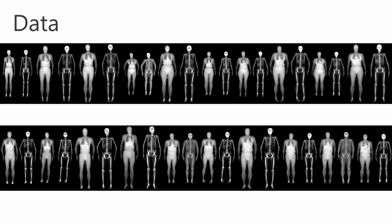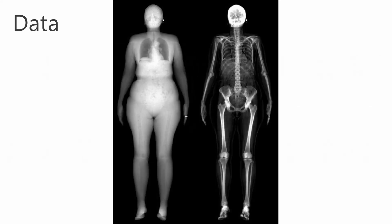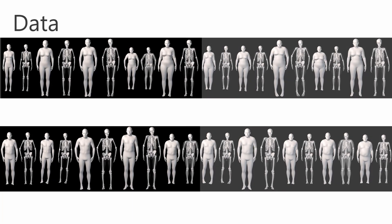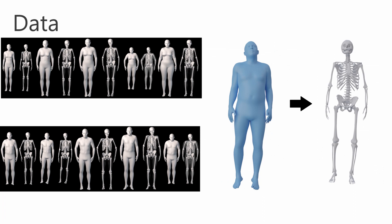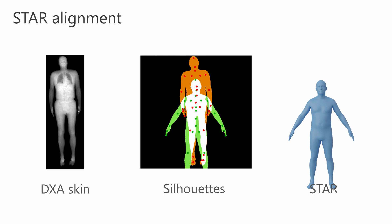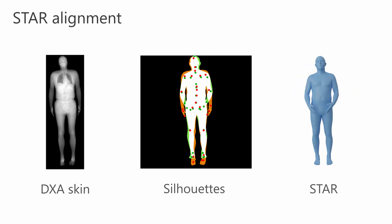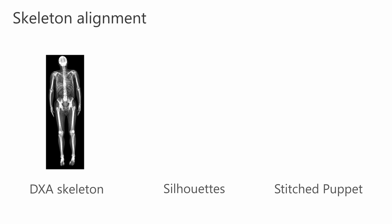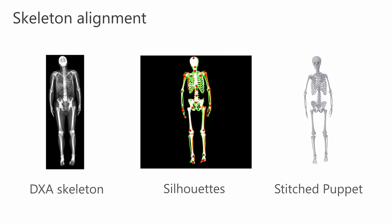Our insight is to use DEXA scans. A DEXA scan is a pair of 2D images: one showing the external body and the other showing the skeleton. We align a body model and a skeleton model to those images, thus building a dataset of paired body and skeleton meshes to learn to predict the inside from the outside. For each DEXA scan pair, we first align the body model STAR to the body silhouette to get a body mesh, then we align a skeleton model to the skeleton silhouette to get a skeleton mesh.